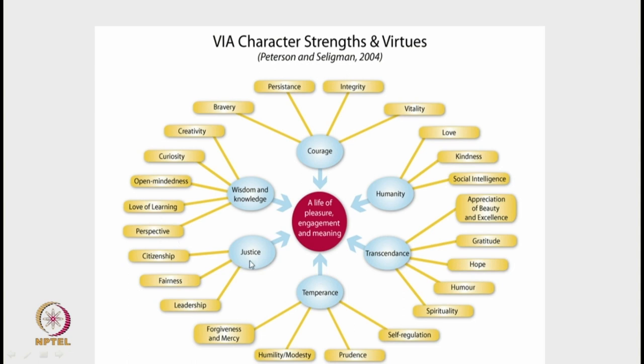This model was prepared on a theoretical basis — not statistically proven, but information was collected from various sources. There are probably six virtues and under these six virtues, 24 character strengths. The first virtue, wisdom and knowledge, involves cognitive strengths that entail the acquisition and use of knowledge. Its first character strength is creativity — originality or ingenuity — thinking in novel and productive ways, including artistic achievement.